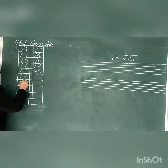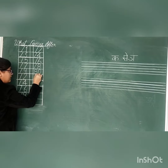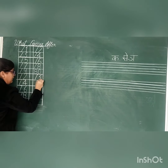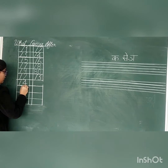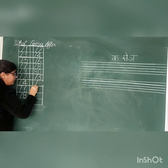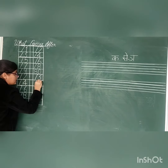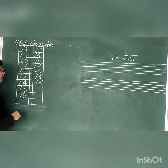7, 2, 72. 7, 2, 72 after: 7, 3, 73. Next: 7, 4, 74. 7, 4, 74 after: 7, 5, 75.